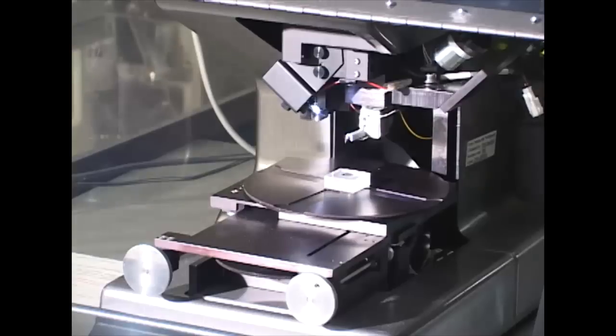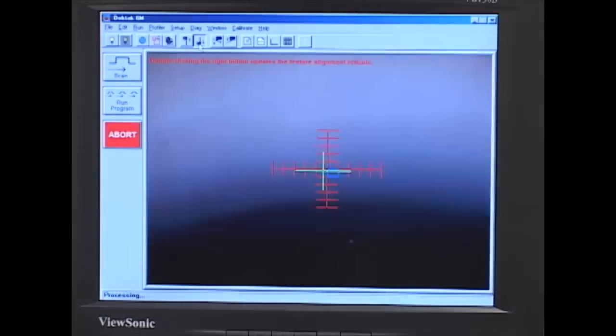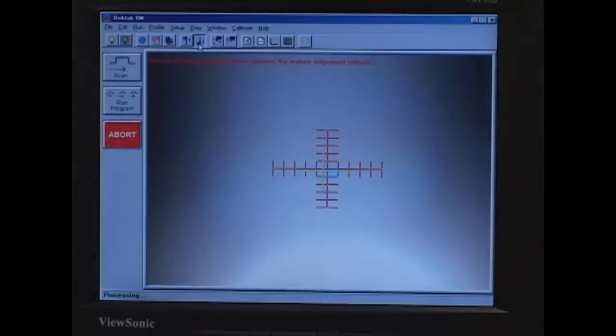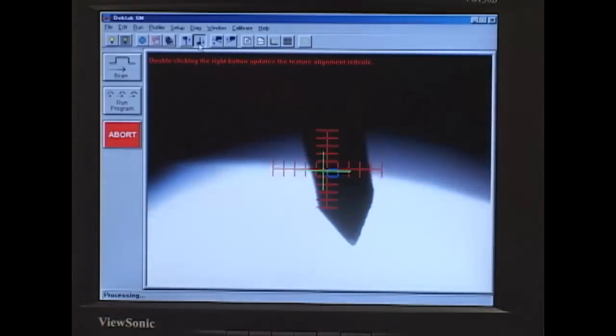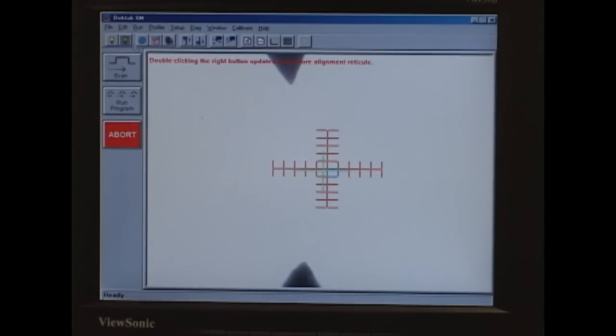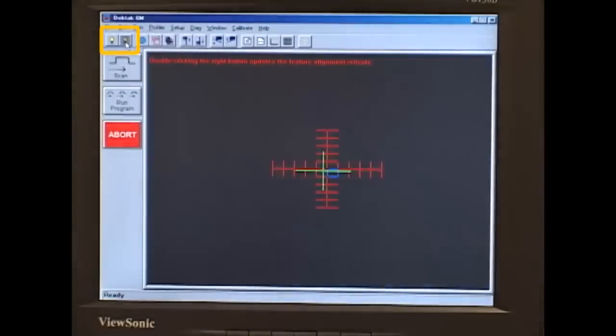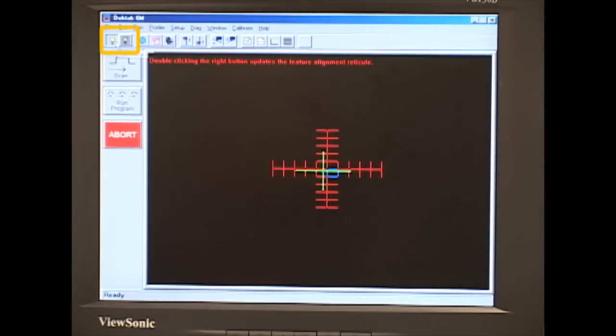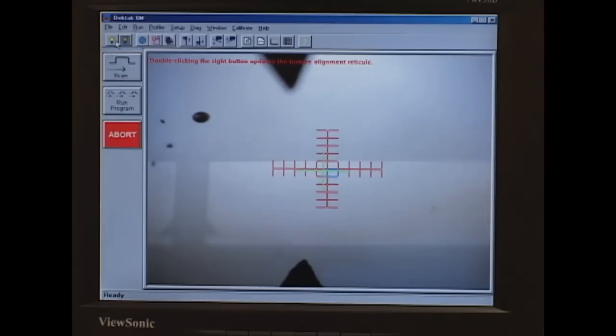And then back on the program, we'll click on this button here, which is the tower down to null position. And that will lower the stylus onto our sample. As you can see, the camera on the instrument is picking up the view of our sample and the stylus touching it. The brightness is pretty high, so we can turn it down and then bring it back up to where we can see much better.